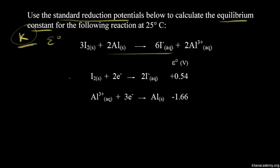Let's start with this first half reaction, where we see solid iodine gaining electrons — it's being reduced to turn into iodide anions. The standard reduction potential for this half reaction is positive 0.54 volts. We can see that's what's happening in our redox reaction: solid iodine on the left side and iodide anions on the right side. So we're going to keep this reduction half reaction.